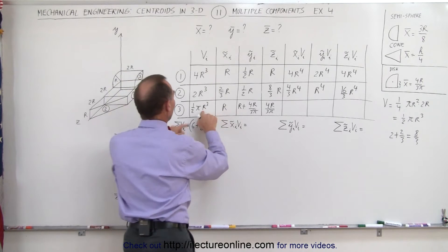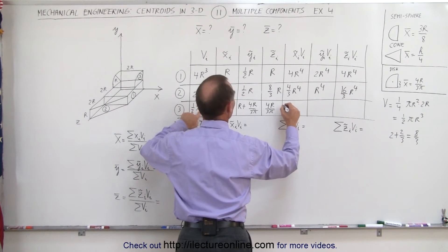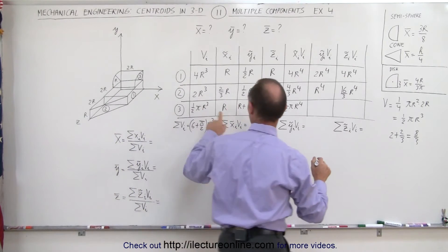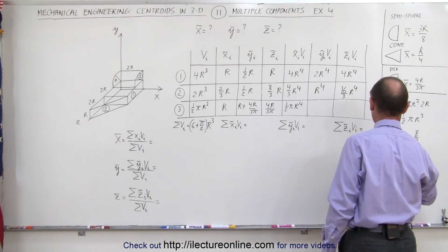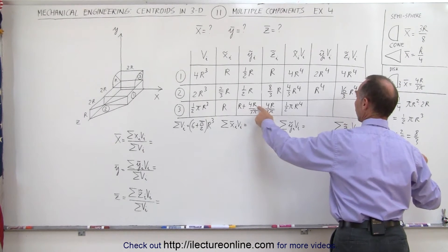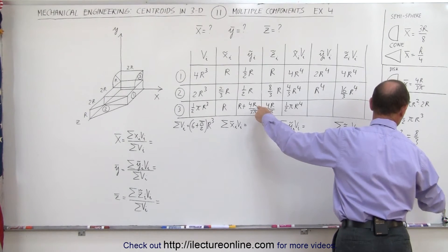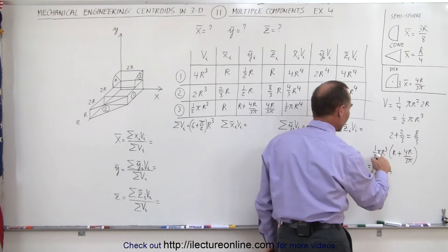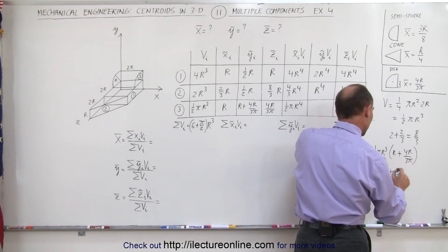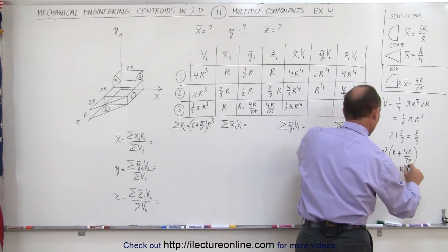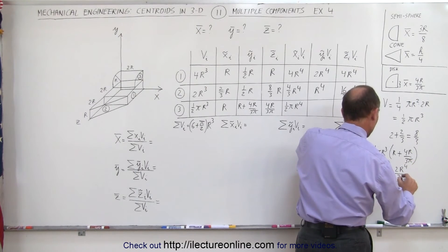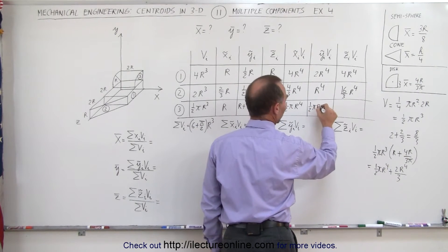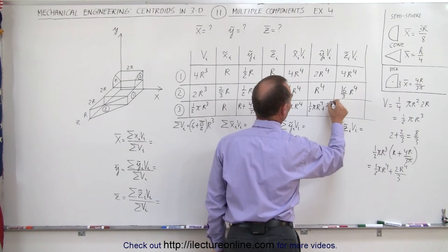For the cylinder's y-moment, we multiply ½π r³ times (r + 4r/(3π)): that gives ½π r⁴ plus — notice the π's cancel and 2 and 4 simplify — giving (2/3)r⁴. So the cylinder's y-moment is ½π r⁴ + (2/3)r⁴. For the z-moment, we multiply ½π r³ times 4r/(3π), which gives (2/3)r⁴.